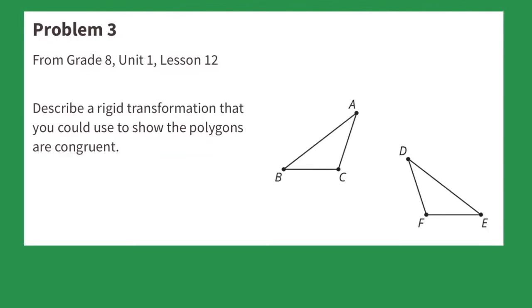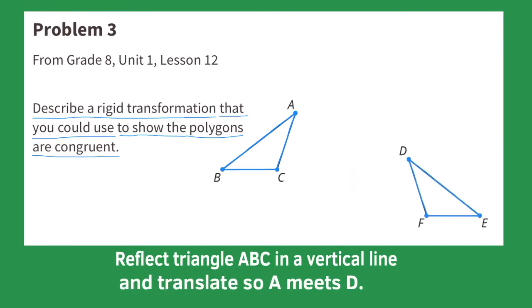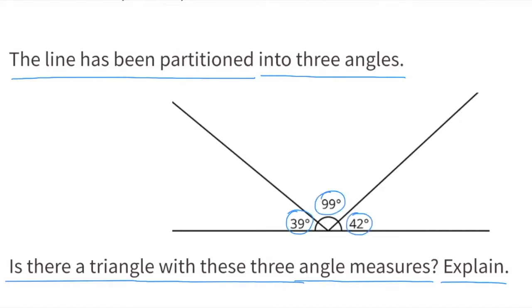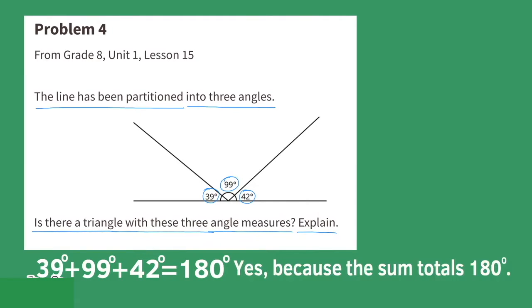Problem number three from 8th grade Unit 1 Lesson 12: Describe a rigid transformation to show the polygons are congruent. Reflect triangle ABC in a vertical line and translate so point A meets point D. Problem number four from 8th grade Unit 1 Lesson 15: The line has been partitioned into three angles. Is there a triangle with these three angle measures? 39 degrees plus 99 degrees plus 42 degrees equals 180 degrees. So the answer is yes, because the sum totals 180 degrees, and all triangles have three angles summing to 180 degrees.